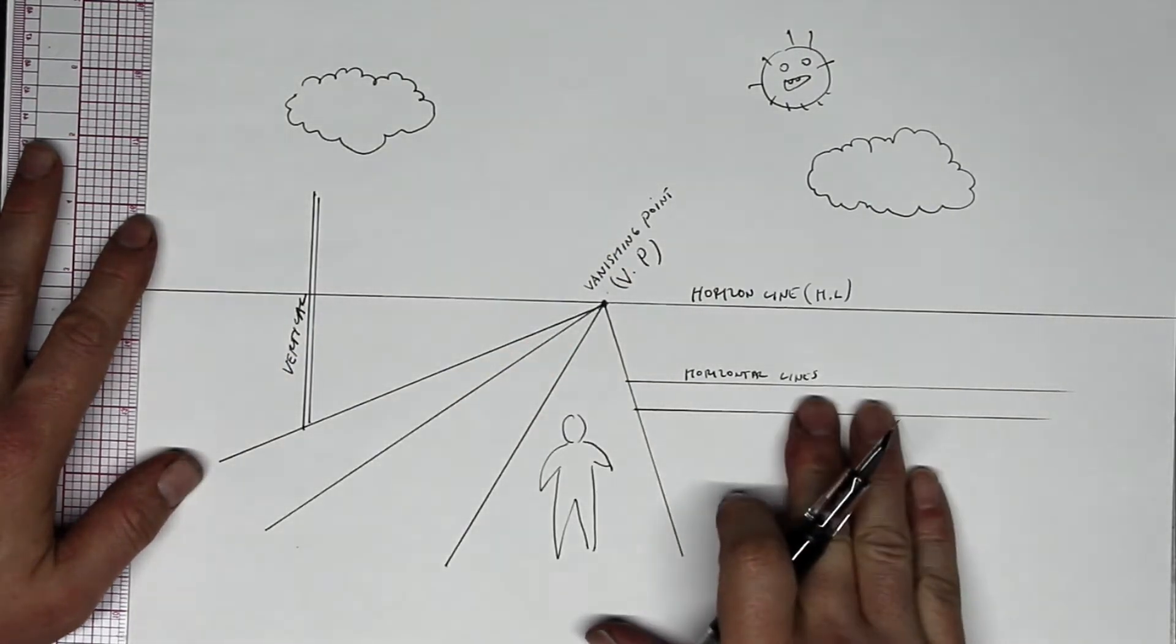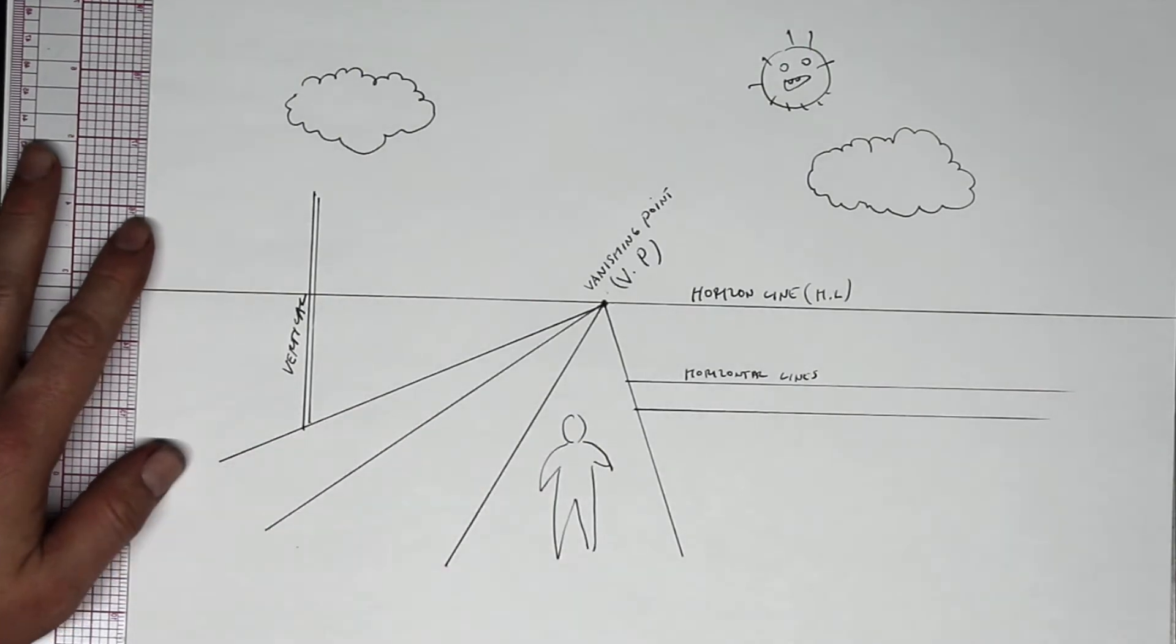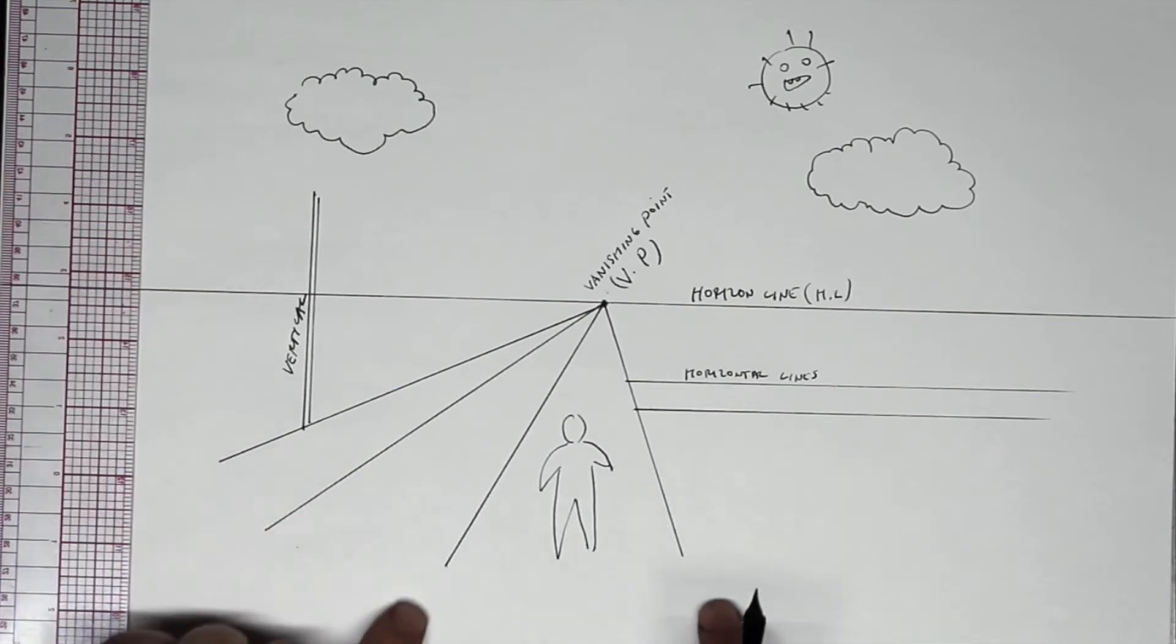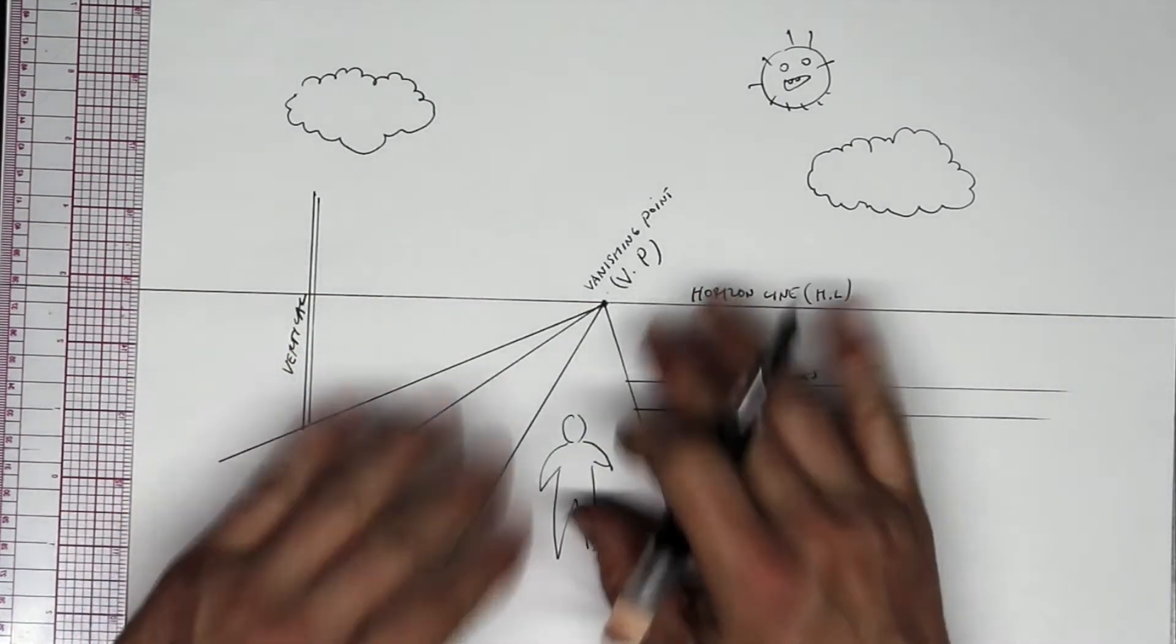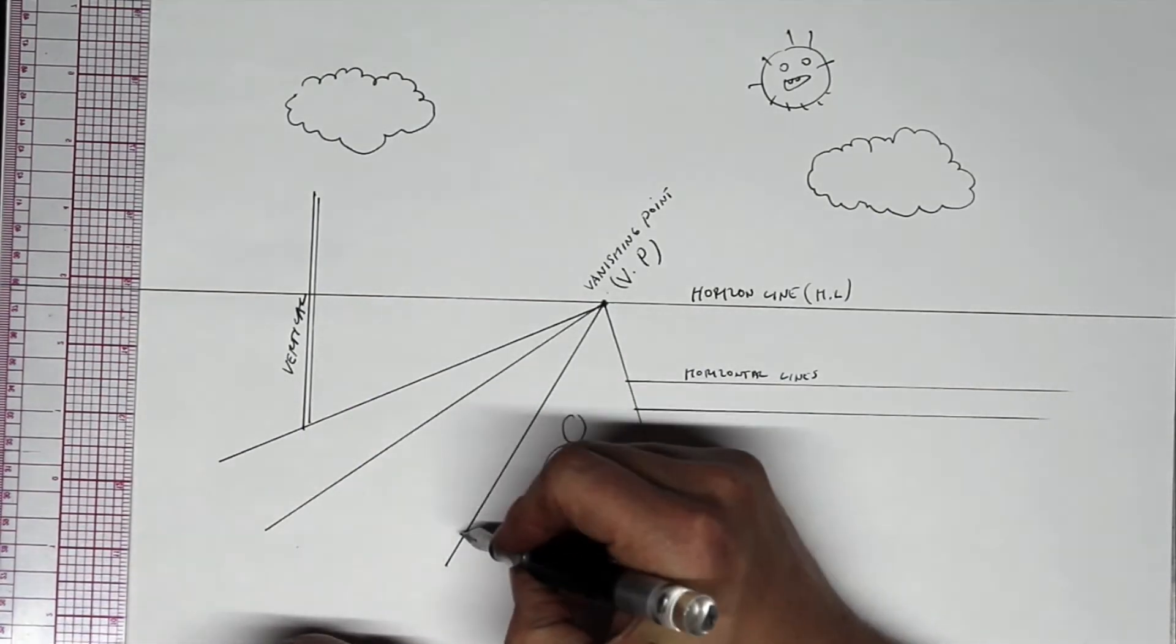So we have horizontal lines, we've got vertical lines, and then we have a third kind of line. And that's a line that goes back in space. So any line that recedes to the vanishing point, any line that is subject to the vanishing point, is called an orthogonal line.